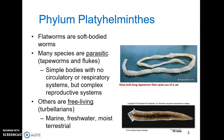Others are free-living — the turbellarians. They live in a variety of habitats: marine, freshwater, and moist terrestrial habitats. The marine flatworms tend to be pretty colorful, whereas the terrestrial turbellarians are more drab. Wherever they're located, they tend to be either carnivorous or detritivores.